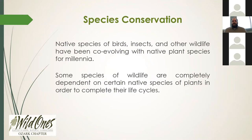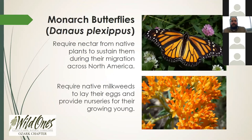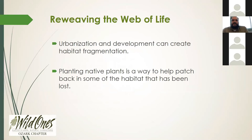Since many species of birds and insects have been co-evolving with native plant species for millennia, some have become completely dependent on specific native species to complete their life cycle — such as monarch butterflies. Monarchs require nectar from native plants to sustain them during their migrations across North America, and they rely on milkweed species as host plants to lay their eggs and provide nurseries for their growing young. Since urbanization and development can create habitat fragmentation, planting native species helps reweave that web of life back into the built environment.